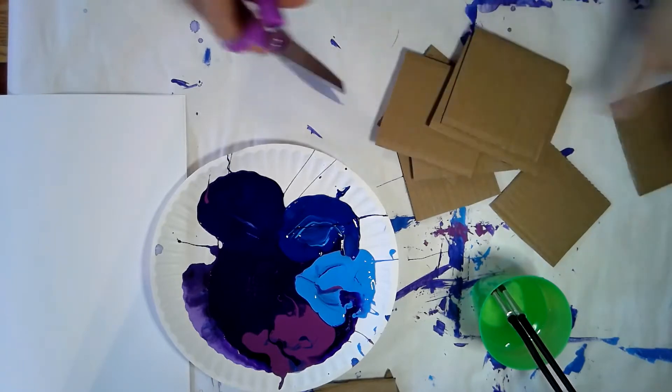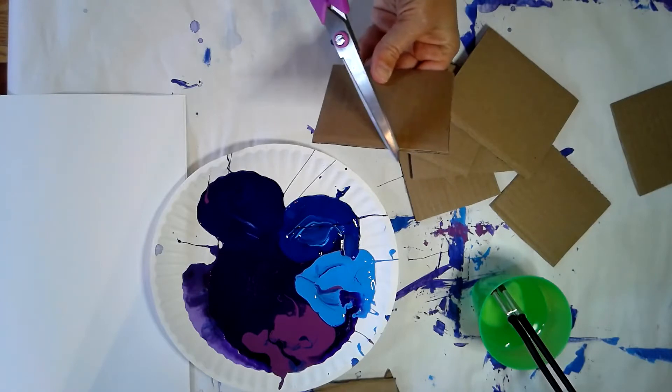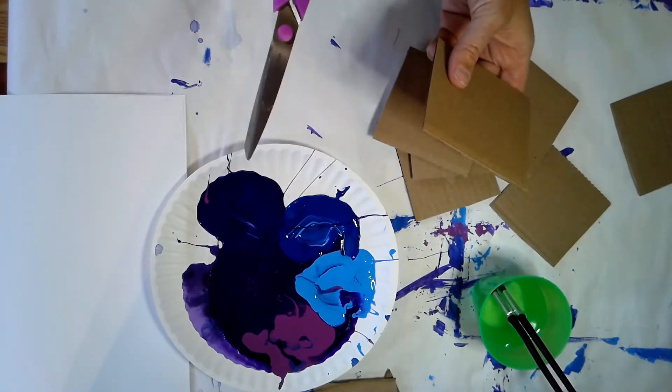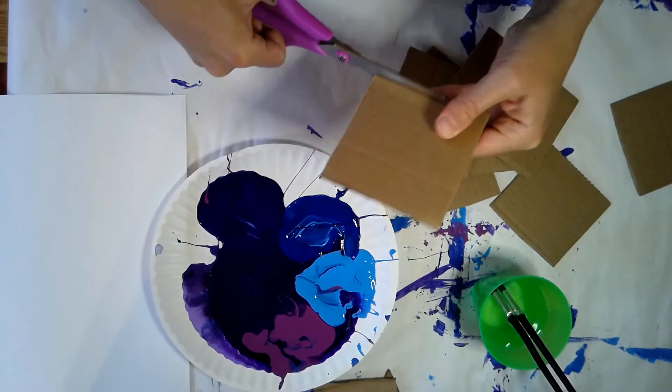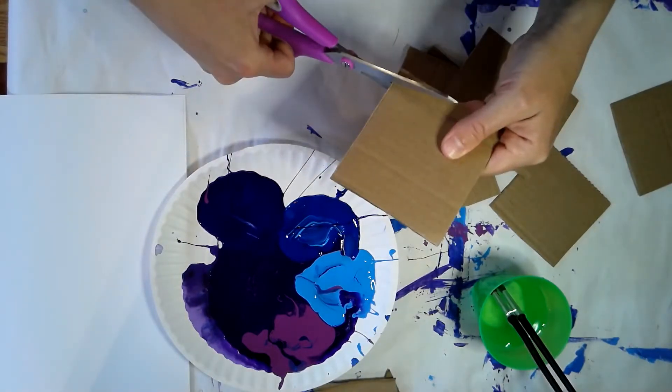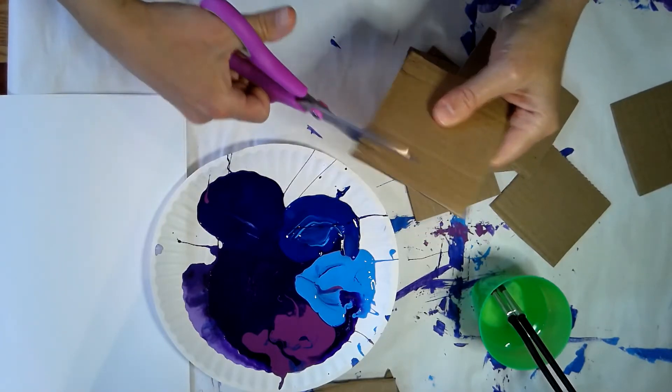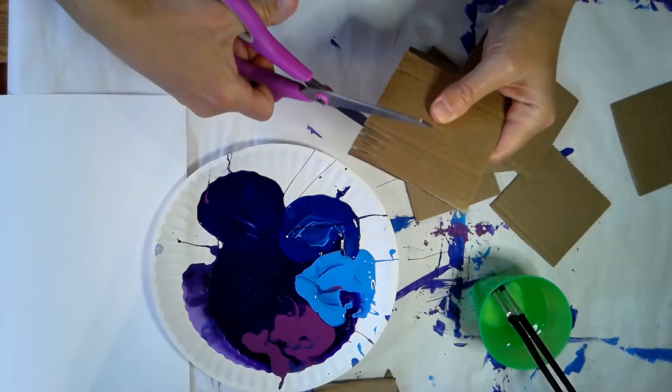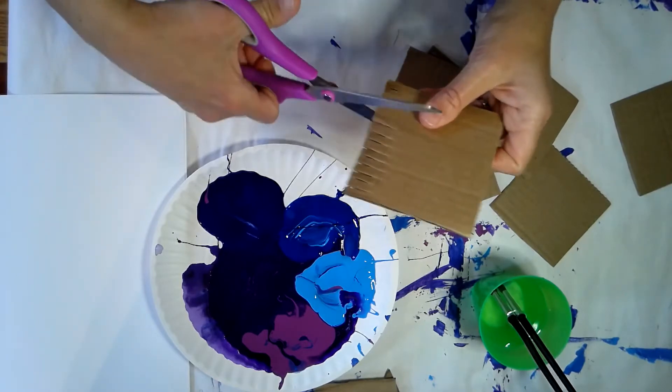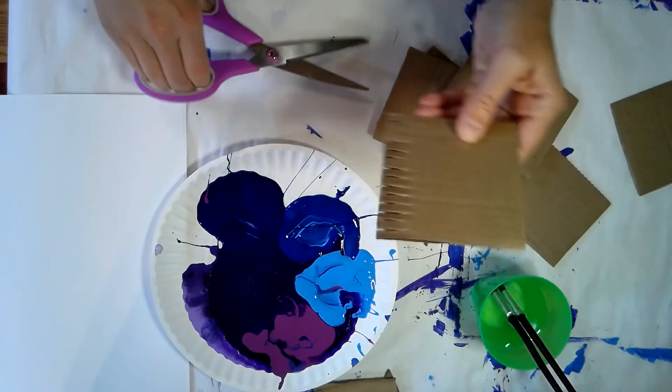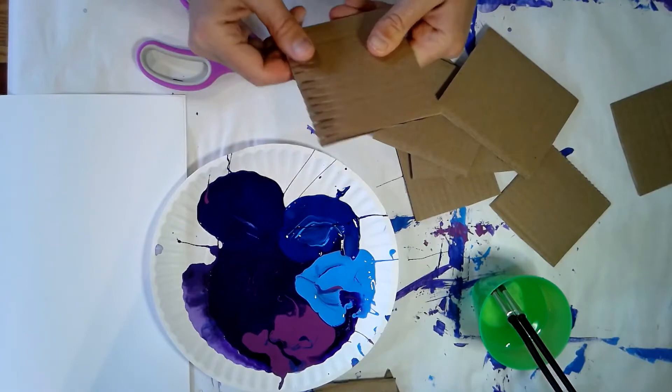Now I'm going to cut on one edge of the cardboard a type of texture or a line. This is going to create some interest when I scrape it across my painted paper. This one I'm cutting fringe into. My cuts are pretty close together, and you can see what kind of texture that creates on the cardboard.